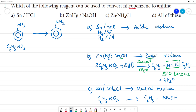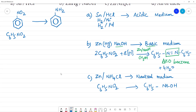The product is C6H5NHOH — here is H, here is OH — after removing water molecules, this is N-phenyl hydroxylamine.